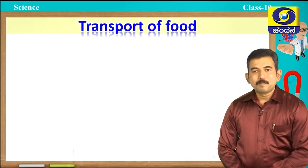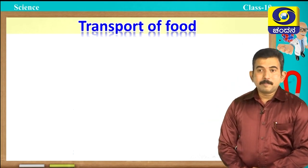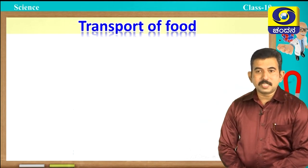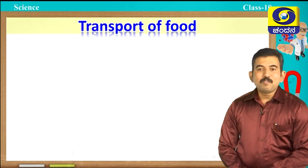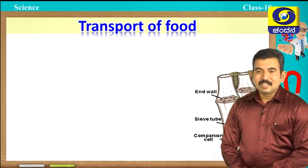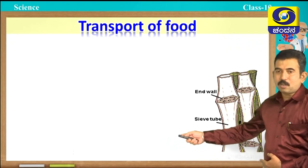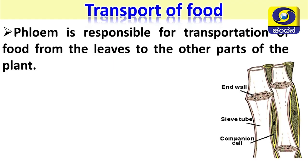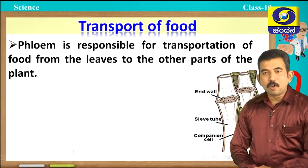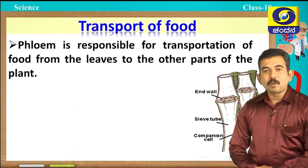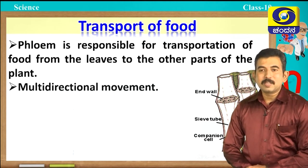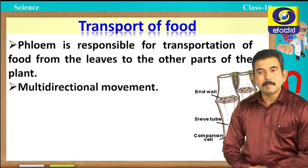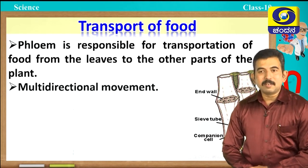Now let us discuss transport of food. In plants, specialized tissue is present for transportation of food, and that is called phloem. Phloem is responsible for transportation of food from the leaves to the other parts of the plant. The transportation in phloem is multi-directional.